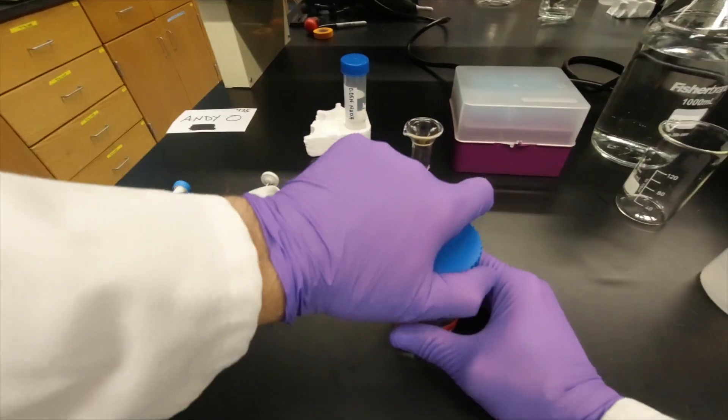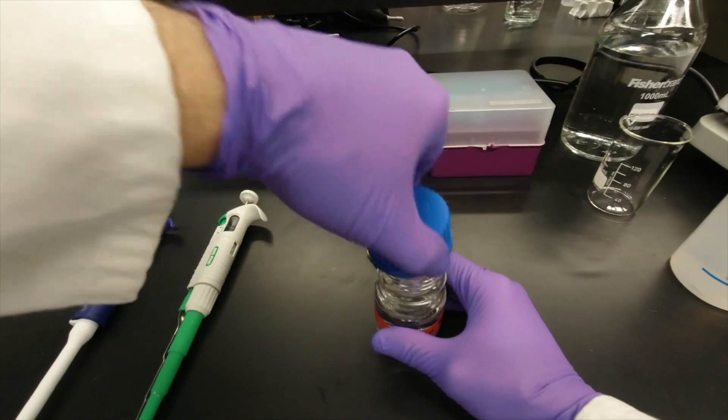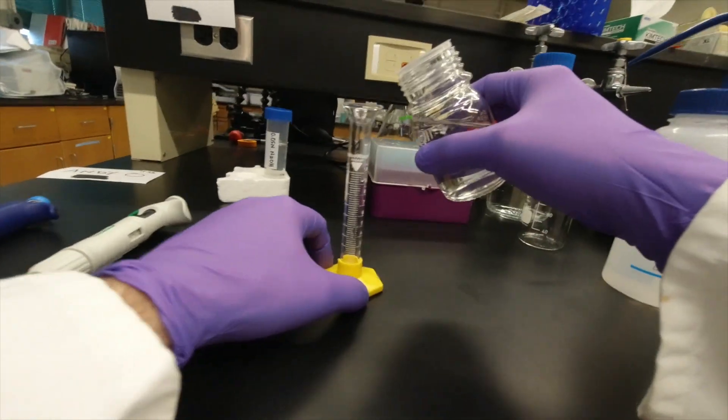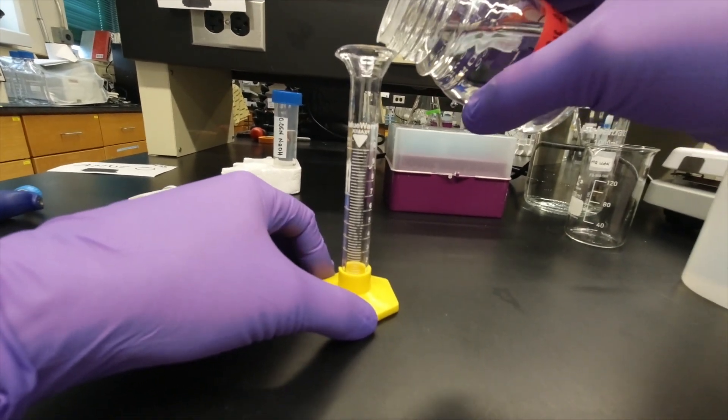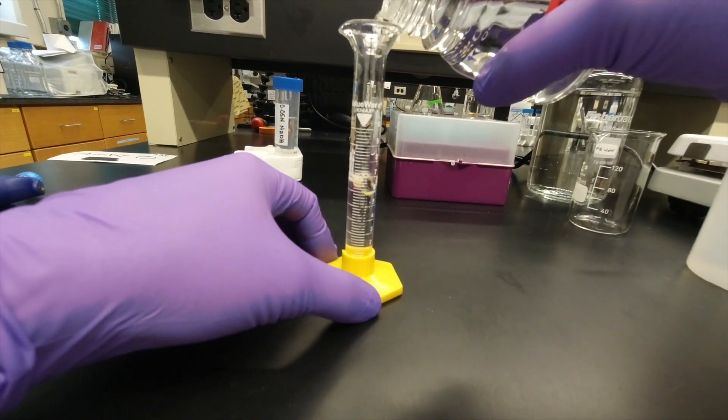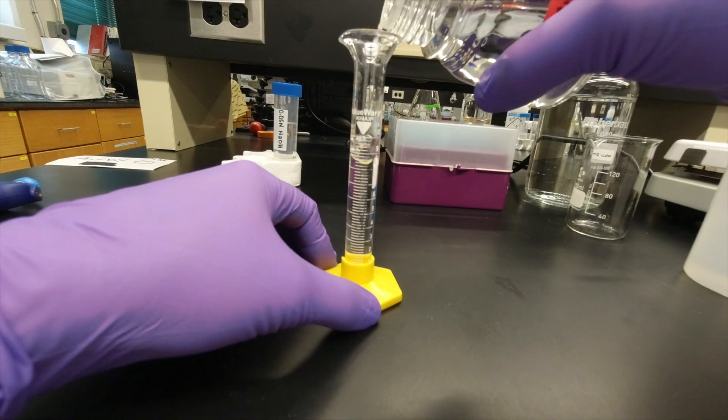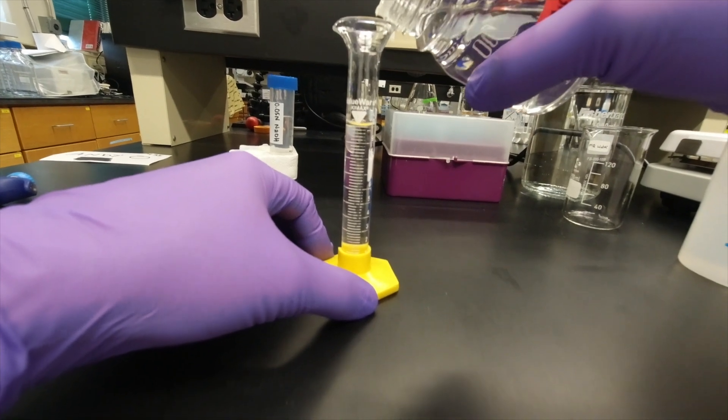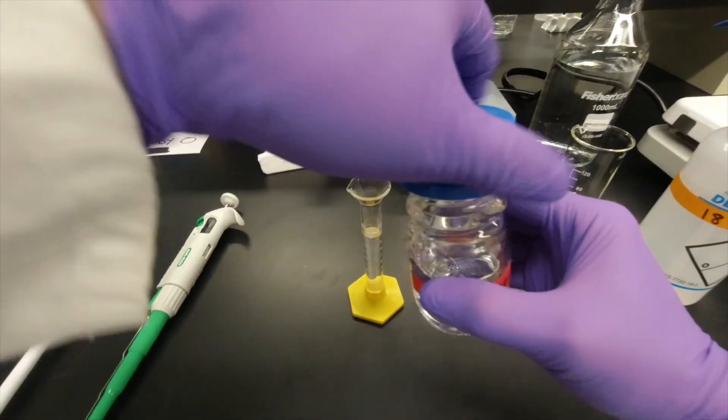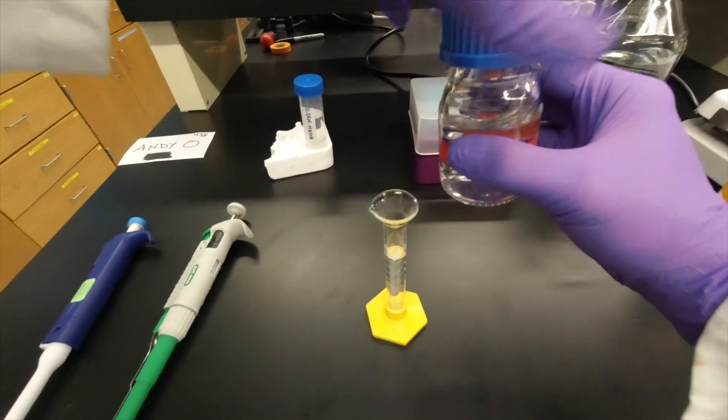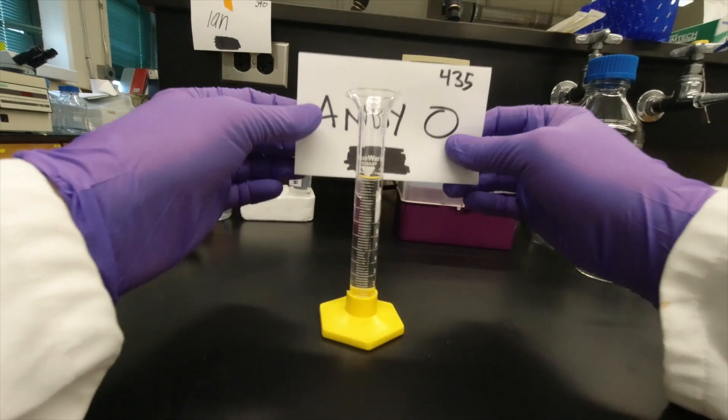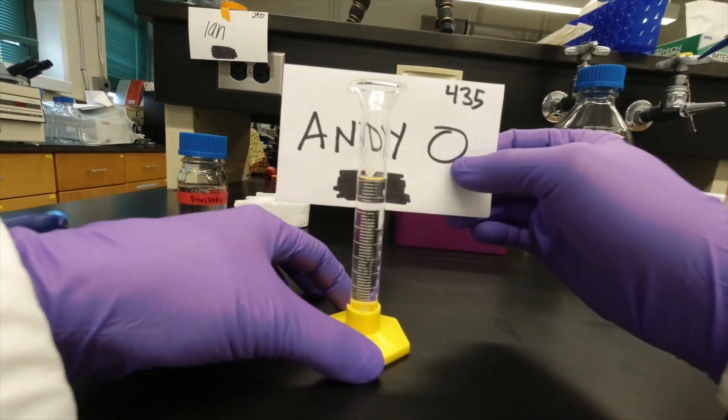So for the phosphoric acid, you want 10 milliliters. And so to get exactly 10 milliliters, you're going to look at the meniscus here. So can you see the meniscus?